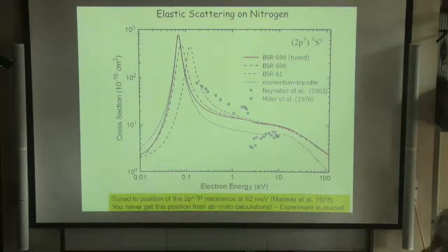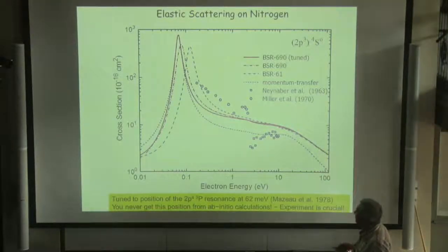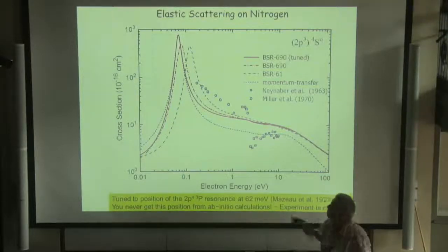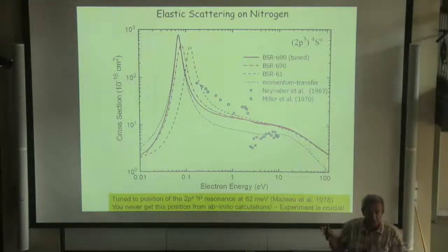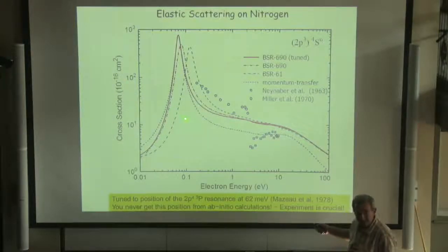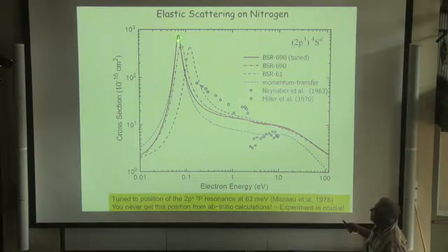One more result in this respect: the last case of nitrogen. Here we have huge resonance. I put only my calculation here, but in literature, you can find many other calculations. Many provide with resonance below threshold, many provide above threshold, so no convergence. But we get some convergence. You never get here the right position with resonance without ab-initio calculation.